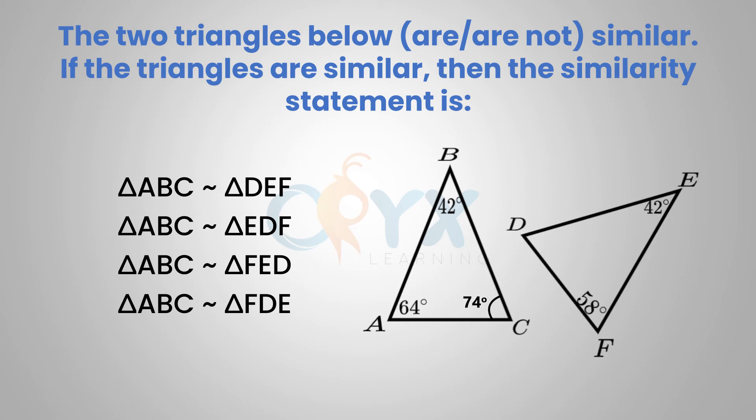Using the same logic, 180 minus 58 minus 42 will give us angle D, which is 80 degrees. As we can see, the triangles do not have two of the same angles. Therefore, the triangles are not similar, and we don't have to write a similarity statement.